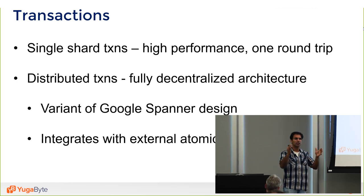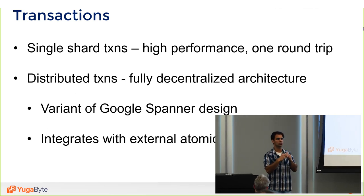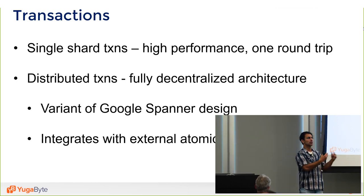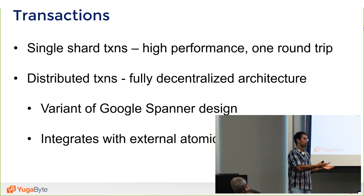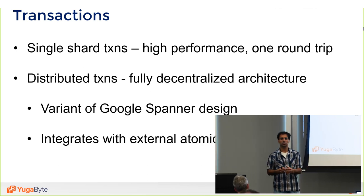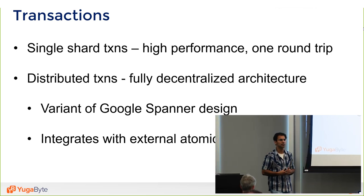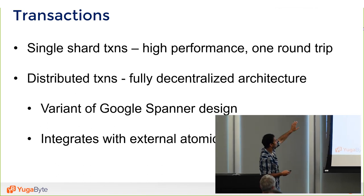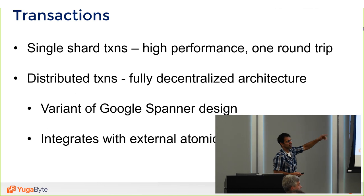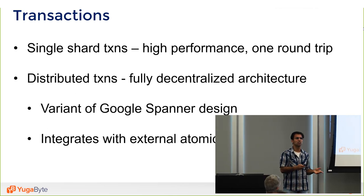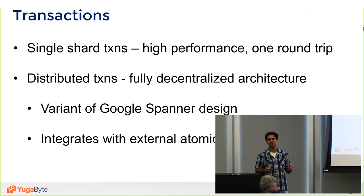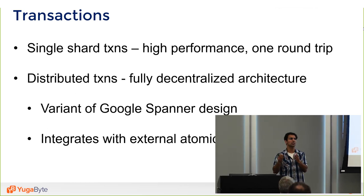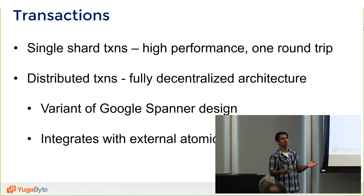When conflicts occur — two transactions trying to update an overlapping set of keys — YugaByte needs to resolve correctness, which falls to clock skew. With an external atomic clock you get better performance; with NTP synchronization latency may be slightly higher, but we believe that's a small percentage of cases. The advantage is you can run high-performance RDBMS-style applications needing transactions, secondary indexes, and unique constraints on a scale-out system.